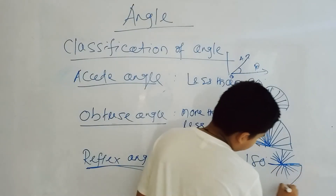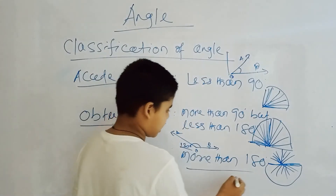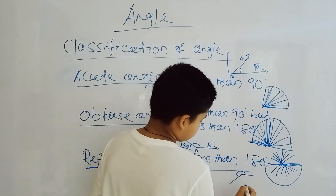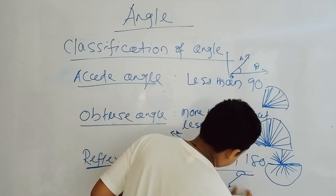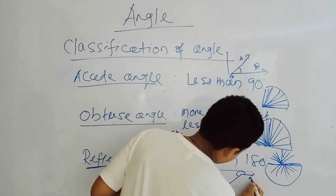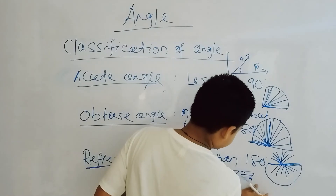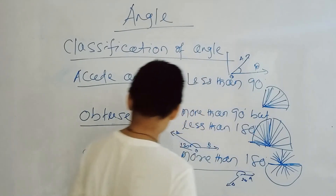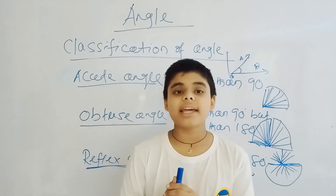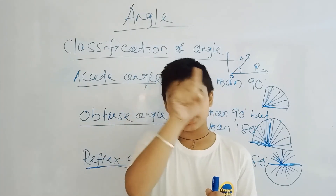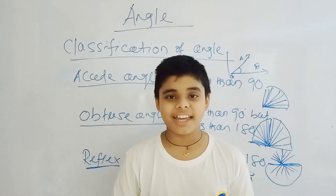The reflex angle — for example, if you think of 180 degrees, the reflex angle goes beyond that. If points A and B form an angle of 200 degrees, we call it a reflex angle. And the last one is the complete angle — a complete angle is 360 degrees, a full rotation, and it ends where it started. It is called a complete angle.